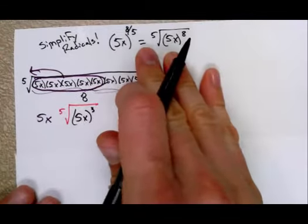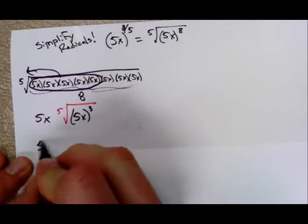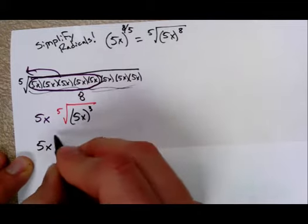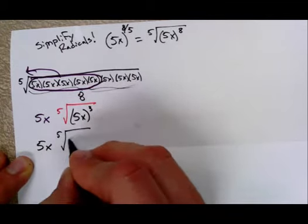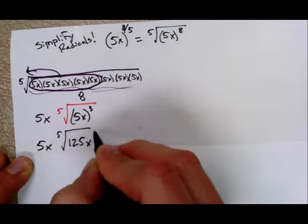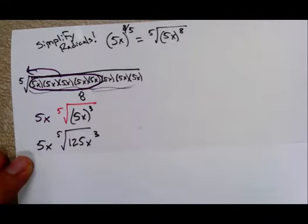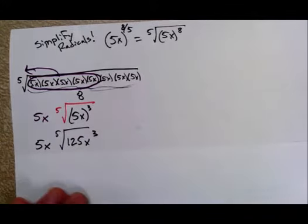And so to simplify, to finish this out, you would actually cube that 5x, so it's the 5th root of 125x cubed there, right? And so that would be one way to do it.